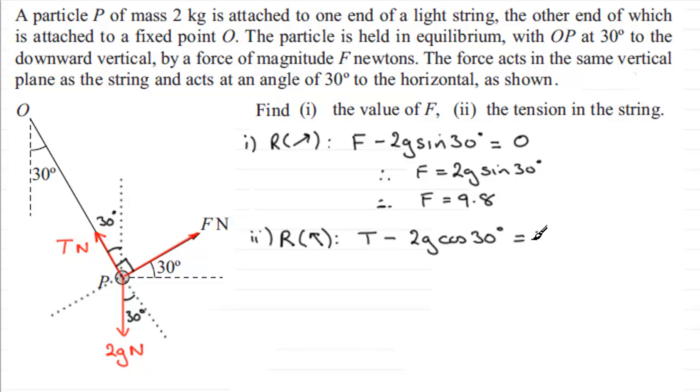We've just got to rearrange this: add 2g cos 30 to both sides, so T equals 2g cos 30 degrees. If you work this out, the exact value - because cos 30 is root 3 over 2, the 2's cancel - you'll end up with root 3 g. But if you substitute g as 9.8, you get T coming out as 16.97 and so on. Let's say we go for three significant figures, so that's 17.0 Newtons to three significant figures.